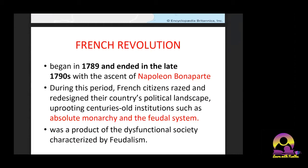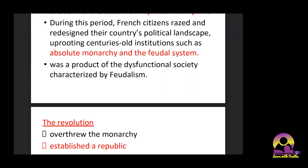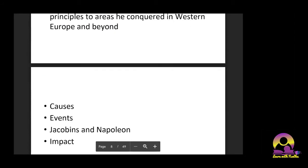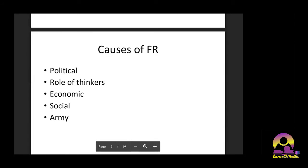The French Revolution aimed to put out the absolute monarchy and establish a constitutional monarchy. The revolution overthrew the monarchy, established a republic, catalyzed violent periods of political turmoil, and finally culminated in a dictatorship under Napoleon. The five different causes of the French Revolution are: political, role of thinkers, economic, social, and army.